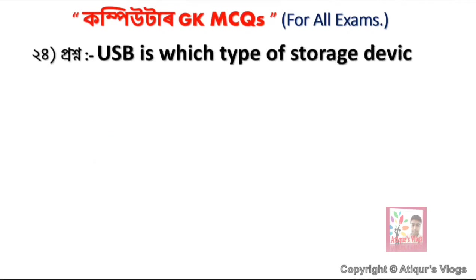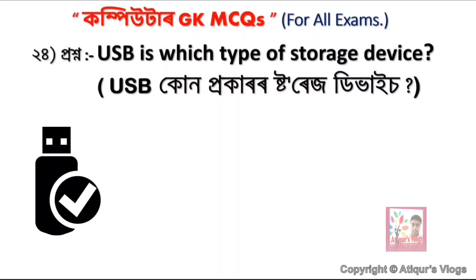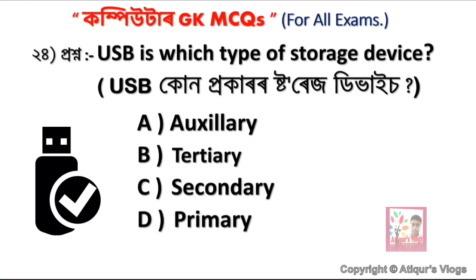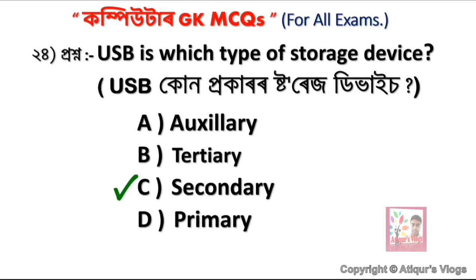USB is which type of storage device? Option one is Auxiliary, option two is Tertiary, option three is Secondary, and option four is Primary. The correct answer is option C — Secondary. USB is a secondary type of memory storage device.